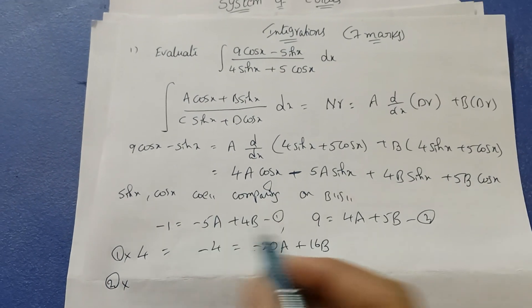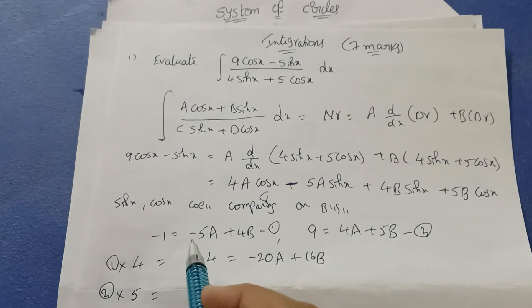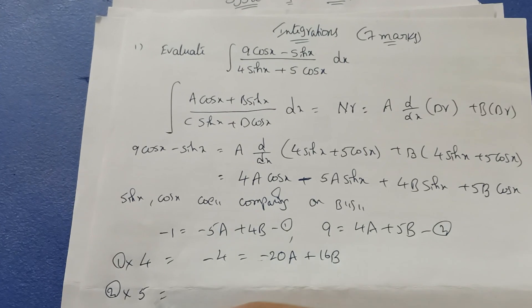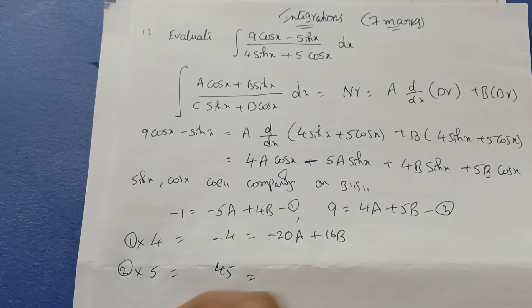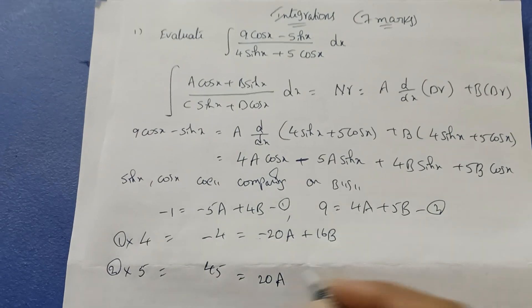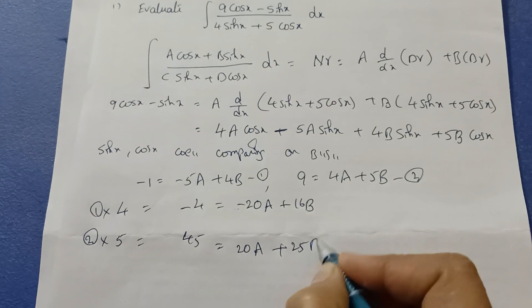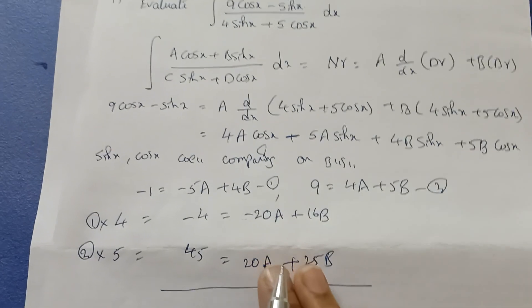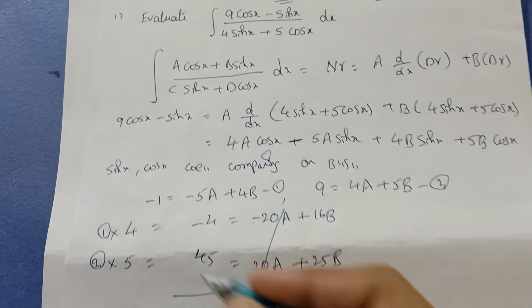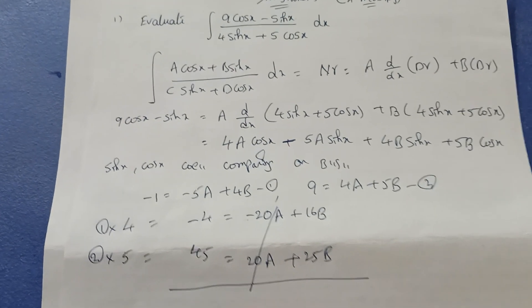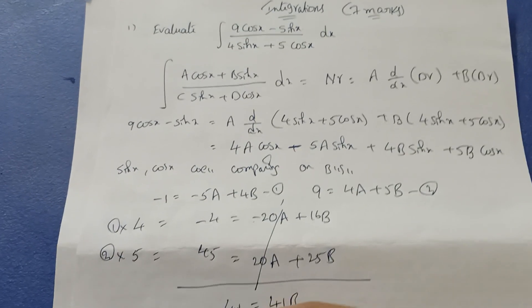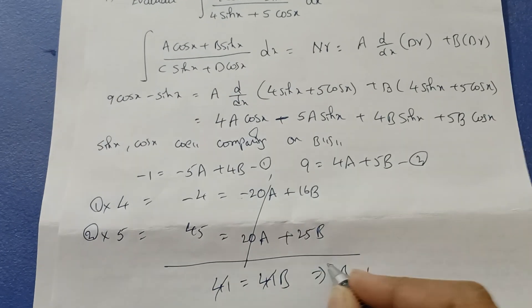Since the signs of the a terms are opposite, add the two equations. The a terms cancel. 45 minus 4 is 41, and on the right side we also get 41b. So 41 equals 41b, which implies b equals 1.